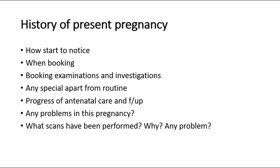The main part to ask in obstetrics history taking is the history of present pregnancy. We have to ask whether it is a planned or unplanned pregnancy, and how did they come to notice that they are pregnant — for example, did they experience any pregnancy symptoms such as nausea and vomiting, or did they notice after their menstrual period was late? Ask whether they did any urine pregnancy tests, either by themselves or at a clinic.